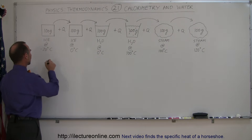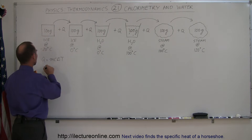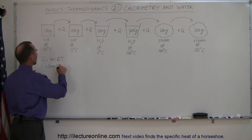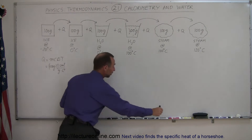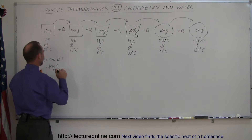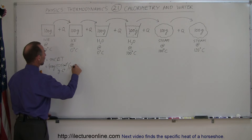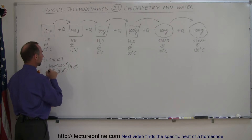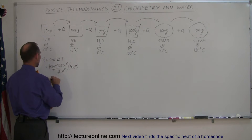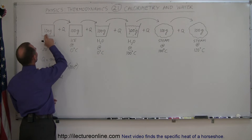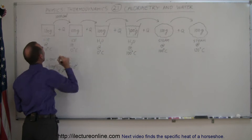For the first part, the amount of heat is Q = mcΔT — no phase change, simply a change in temperature. The mass is 100 grams. The specific heat c for ice is 0.5 calories per gram per °C (not 1, which is for water). The temperature difference is 20°C, so we get 0.5 × 20 × 100 = 1000 calories.